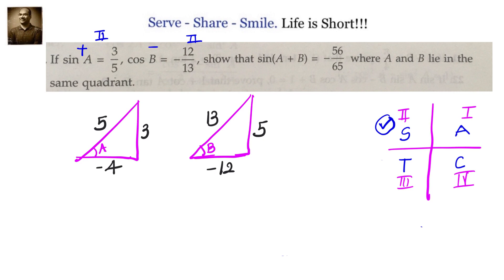Since we know that sin(A) is positive and cos(A) will be negative in the second quadrant, cos(A) = -4/5 and sin(A) = 3/5. If 5, 3, 4 were all positive, A would be in the first quadrant. Similarly, if 13, 5, 12 were all positive, B would be in the first quadrant. But since both are in the second quadrant where cosine is negative, cos(A) = -4/5 and cos(B) = -12/13, while sin(A) = 3/5 and sin(B) = 5/13.